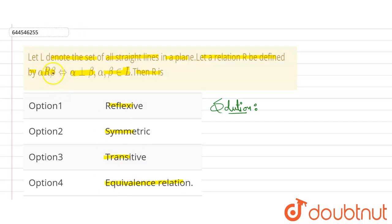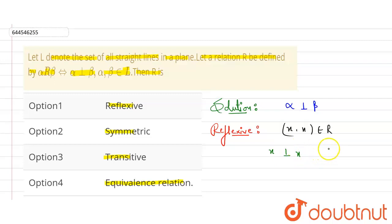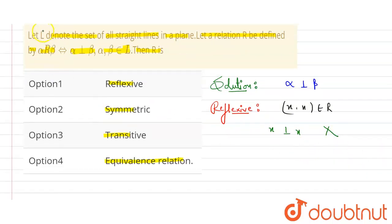So the equation for this relation is: alpha is perpendicular to beta. First, let's check for reflexive. According to reflexive, (x, x) — the same element — must belong to the relation. Here, in place of alpha and beta we write x. Suppose x is a line; is x perpendicular to x? No, a line cannot be perpendicular to itself. So it is not reflexive.